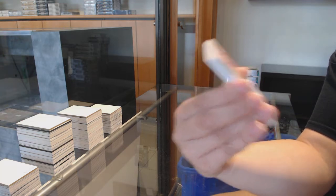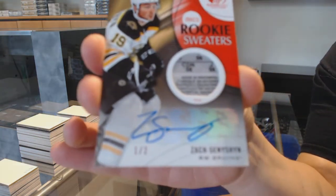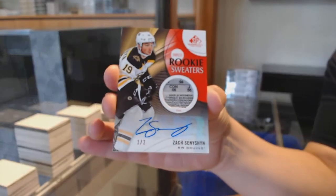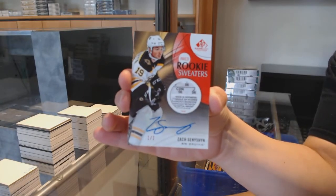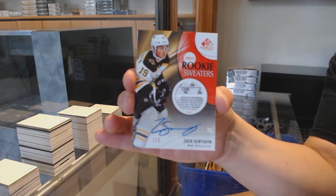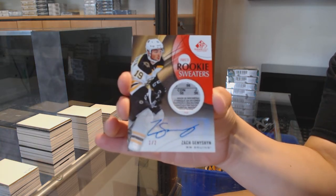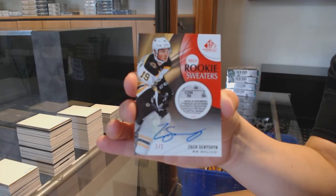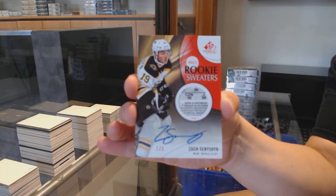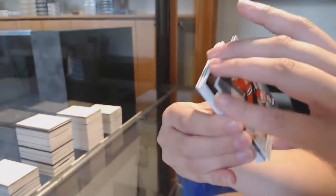Inked rookie sweaters. Tag auto number 22 for the Boston Bruins, Zach Seneshan. Zach Seneshan, number 22. Rookie tag auto for Boston.